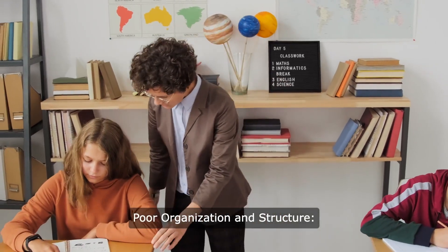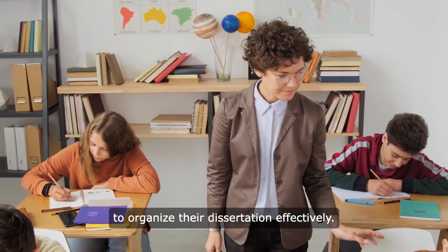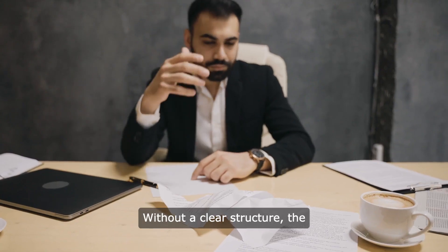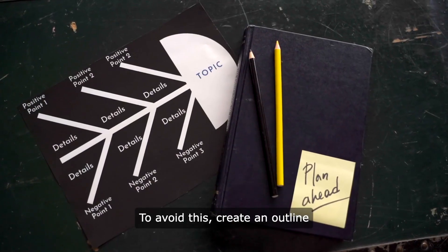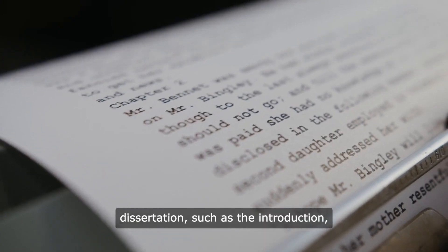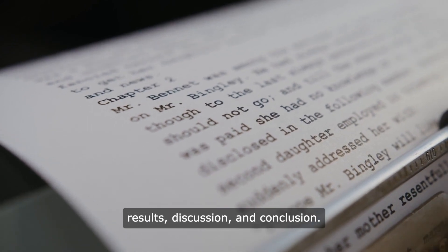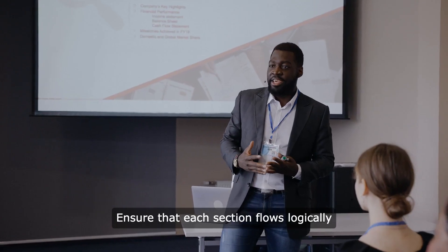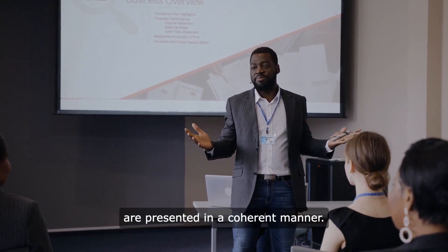Poor organization and structure. Another common mistake students make is failing to organize their dissertation effectively. Without a clear structure, the dissertation can appear disjointed and confusing to the reader. To avoid this, create an outline outlining the main sections of your dissertation, such as the introduction, literature review, methodology, results, discussion, and conclusion. Ensure that each section flows logically into the next and that your arguments are presented in a coherent manner.